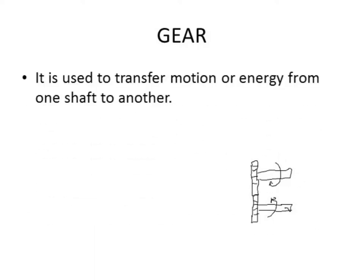Today we will be talking about gears. We have any power-producing machine placed at some position, but we do not want force, motion, or power at that position — we want it somewhere else. So for that we use a different mechanism to transfer that motion, power, or energy. A gear is one of those mechanisms; it is used to transfer motion or energy from one shaft to another.